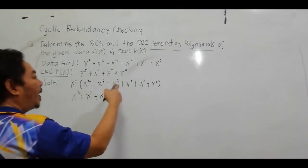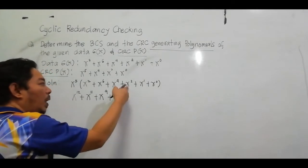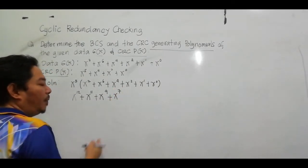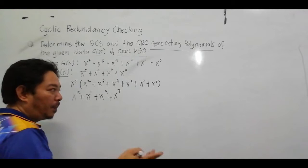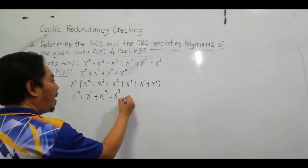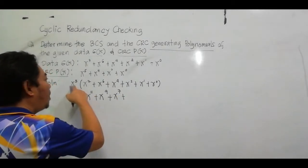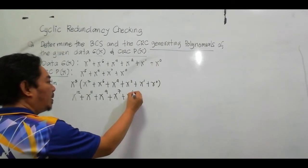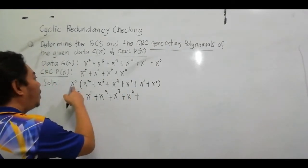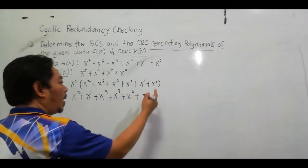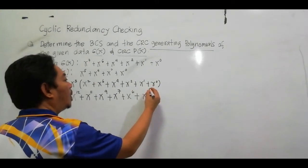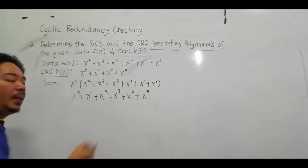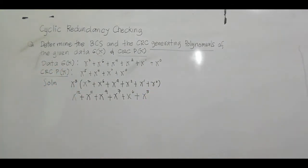Continuing the multiplication: X^5 times X^2 gives X^7, then we have X^6, and finally X^5. We simply add the exponents throughout.